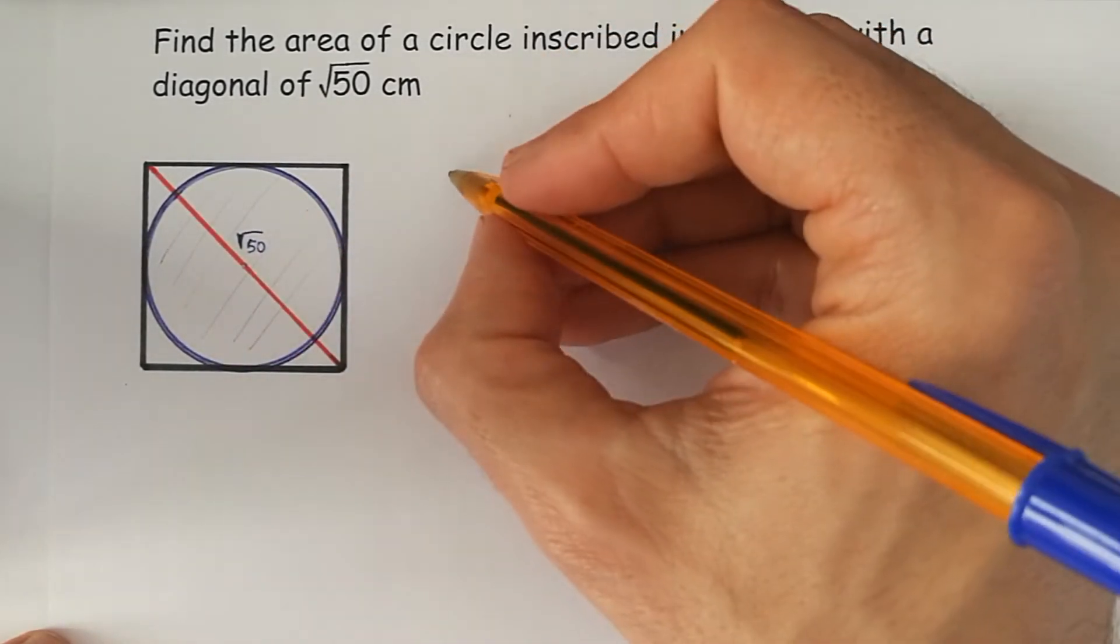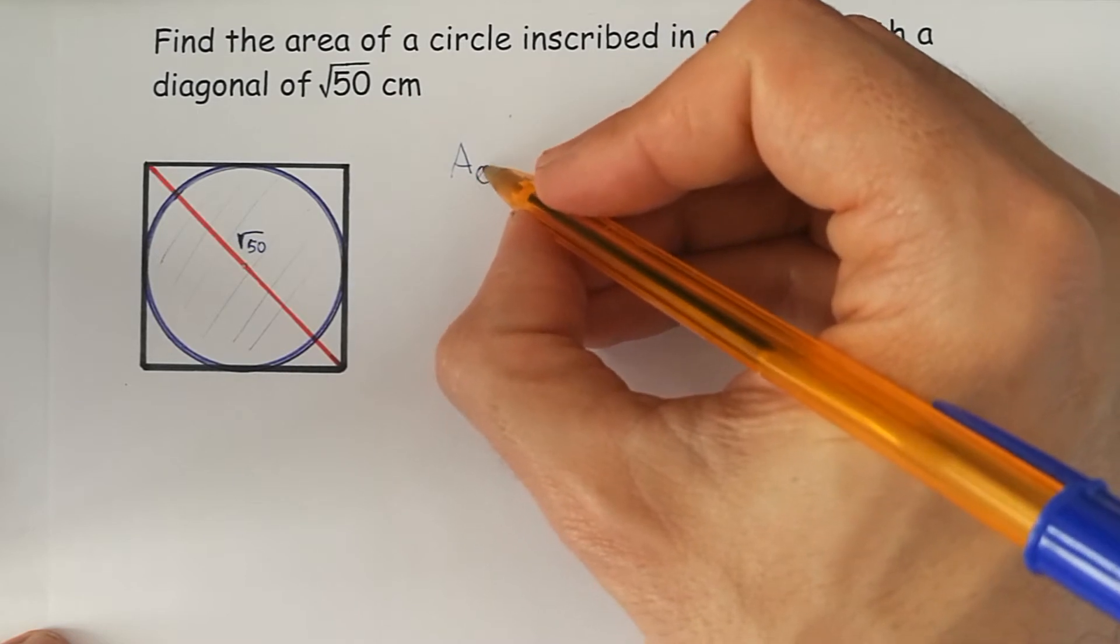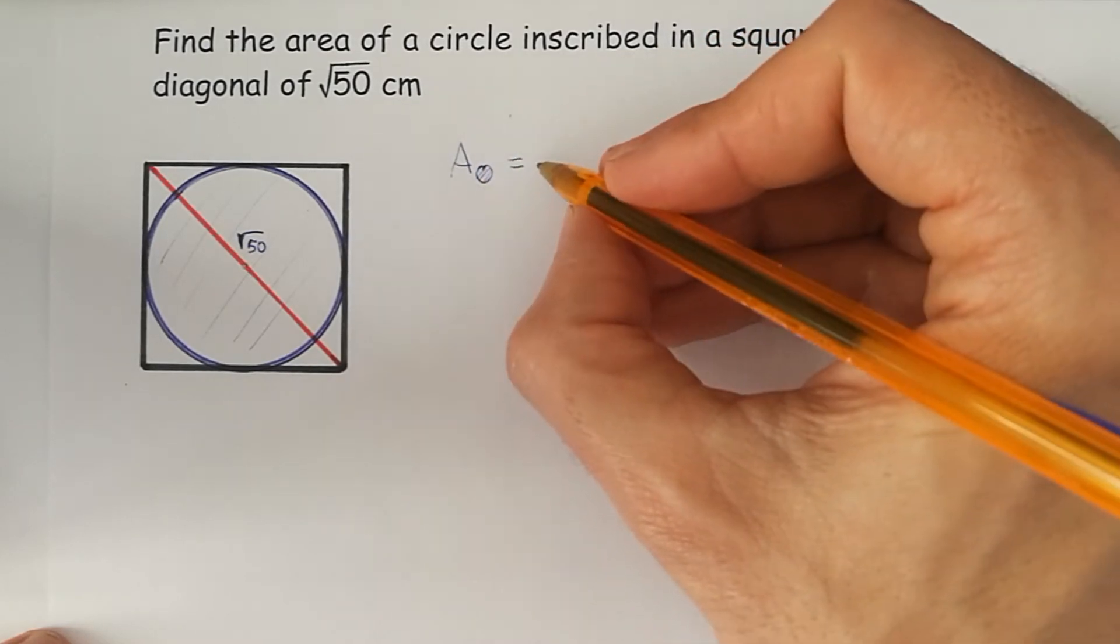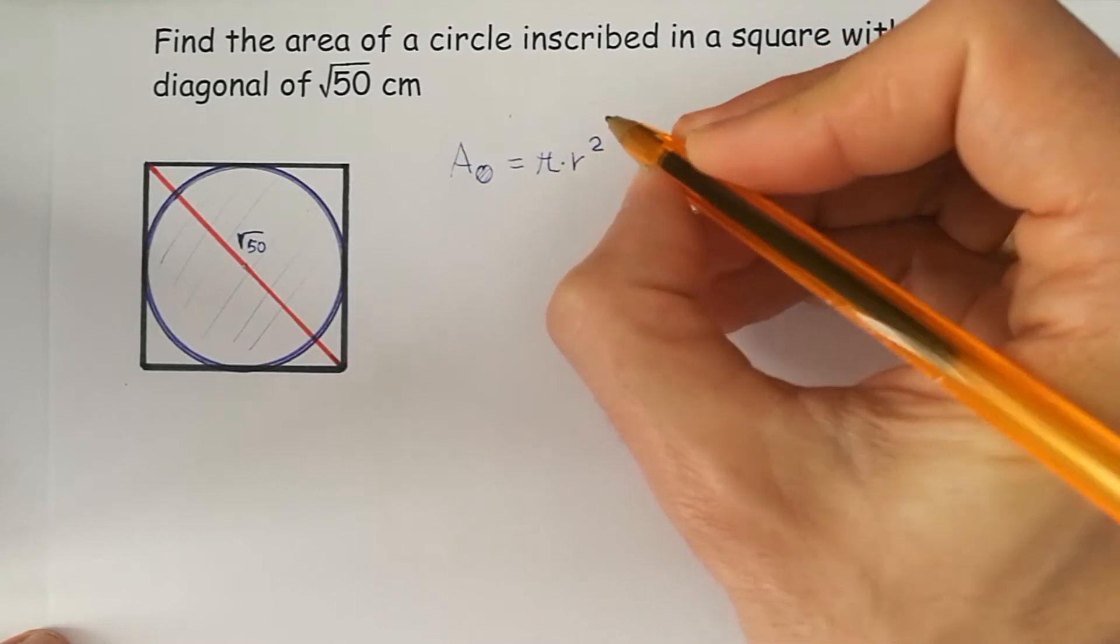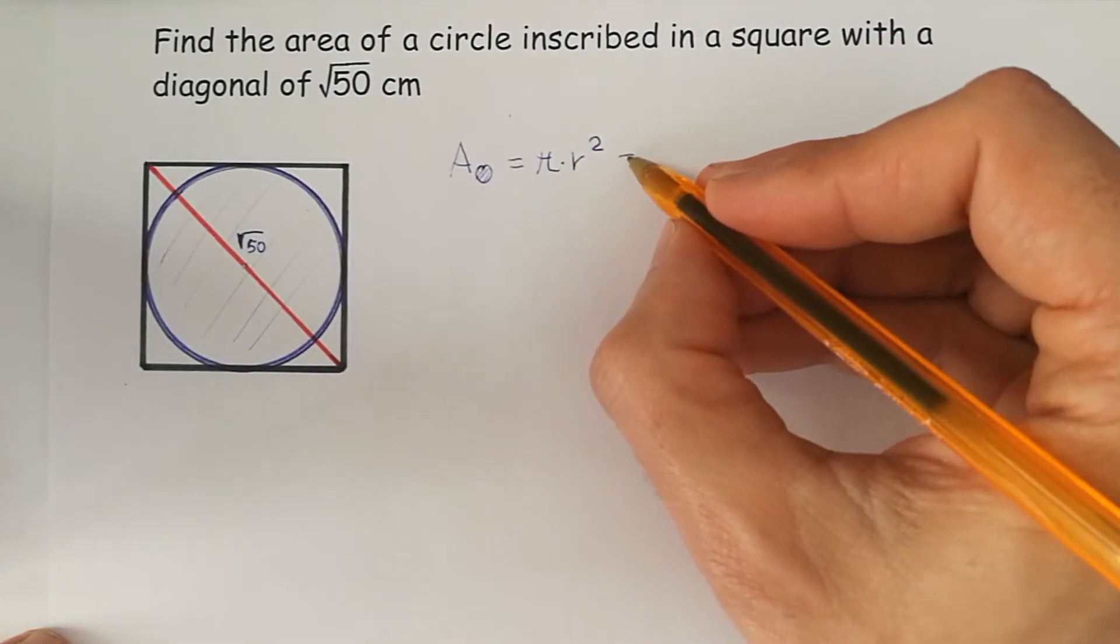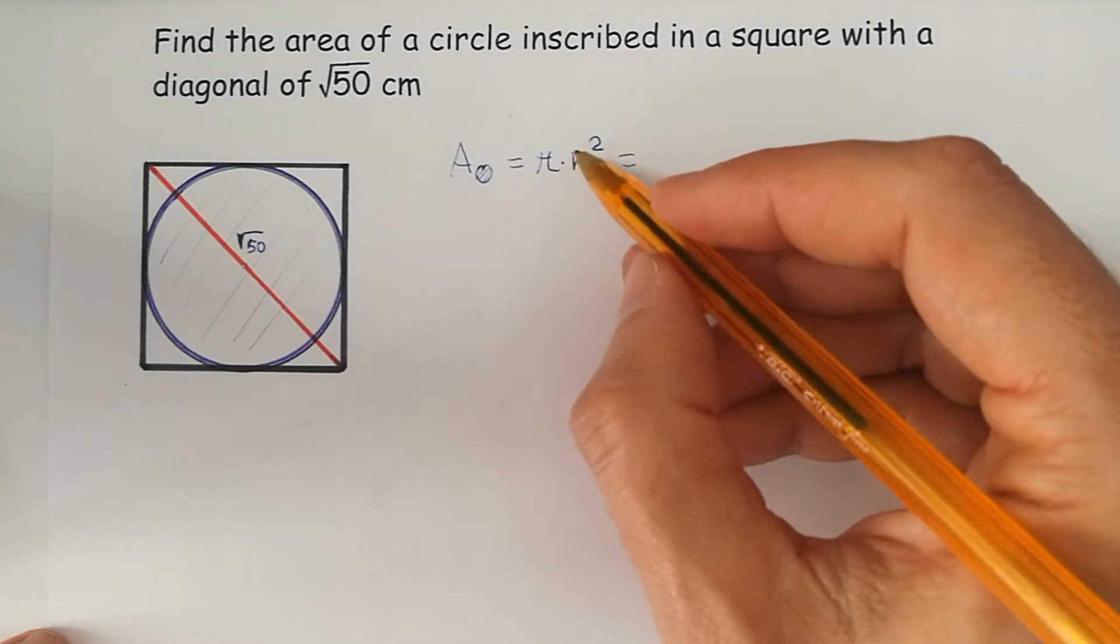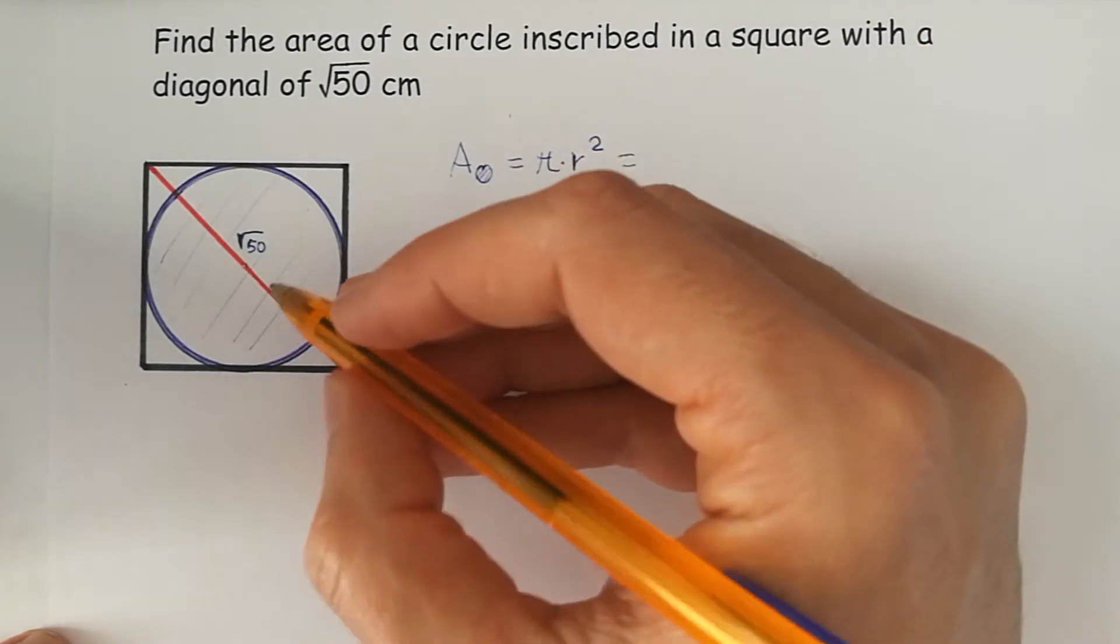The area of a circle we can find as the product π times r squared. So the first target is to find the radius of the circle.